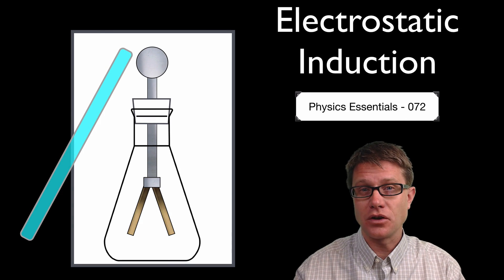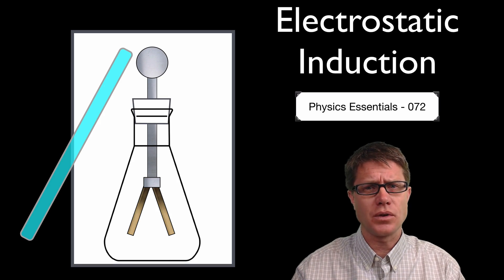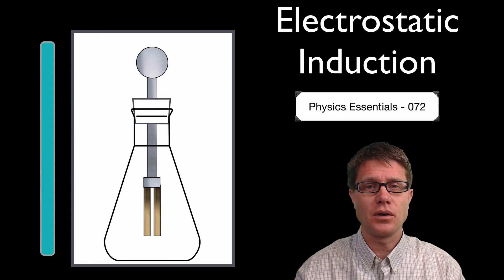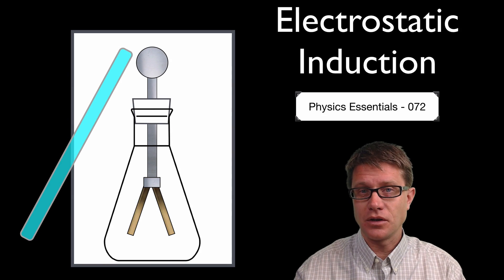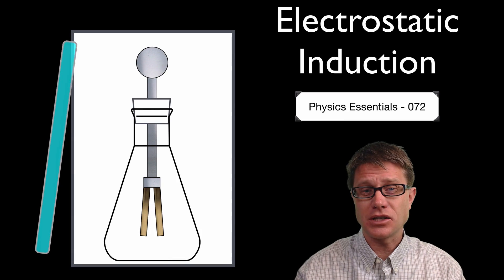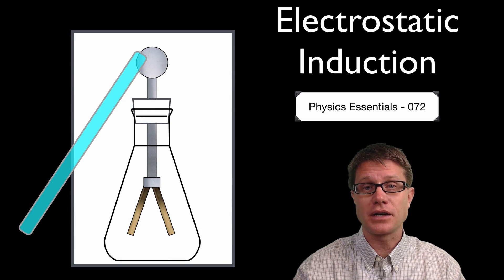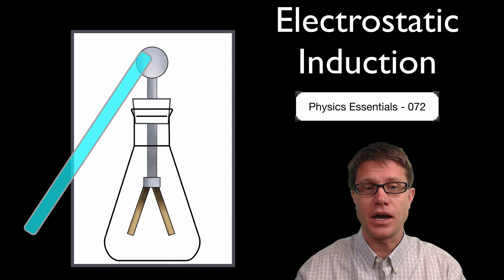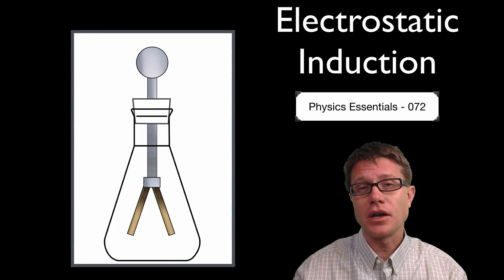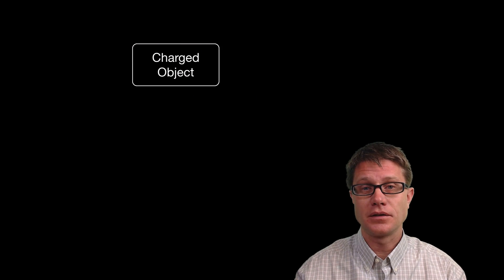As you pull it close to the electroscope, induction is taking place — it is impacting the charges within the electroscope. Watch what happens as we pull it away: the leaves go back to where they were. As we put it closer there is induction; as we pull it away they go back. What happens if we actually touch it? Now conduction takes place — we are actually transferring charges — and as I pull it away those leaves are going to be held apart.